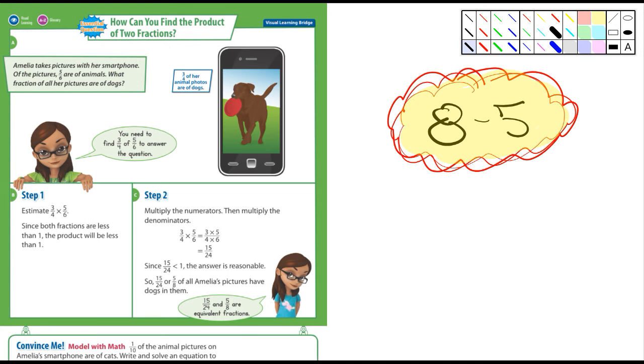So this section is really going to be a review. So in this first example here, it says Amelia takes pictures with her smartphone. Of all the pictures she's got, five-sixths of them are animals. And then it says what fraction of all of her pictures are dogs. And so right here, it says three quarters of the animal photos are of dogs.